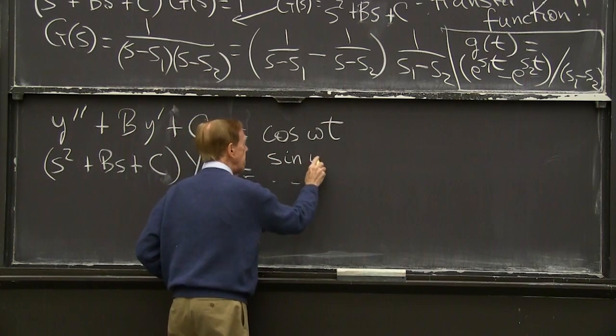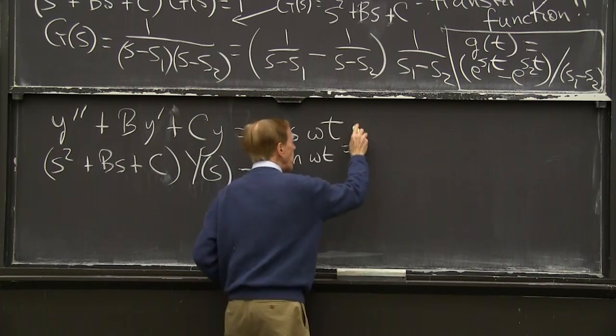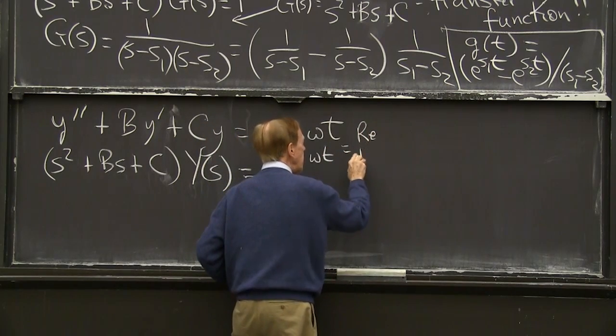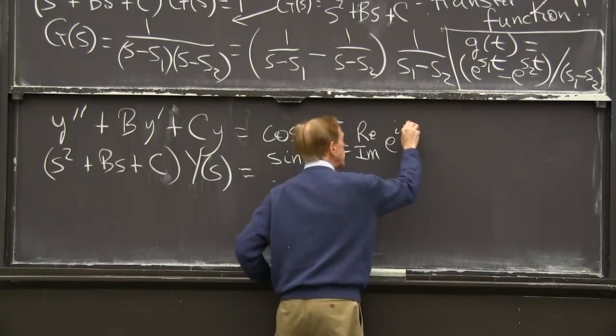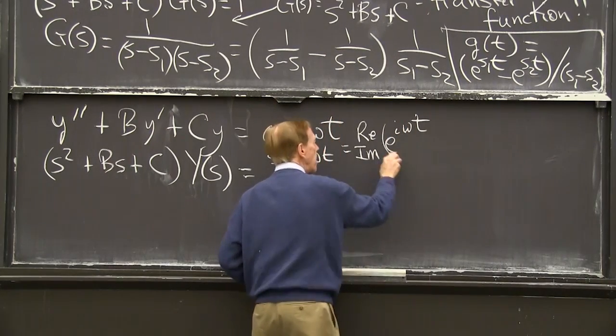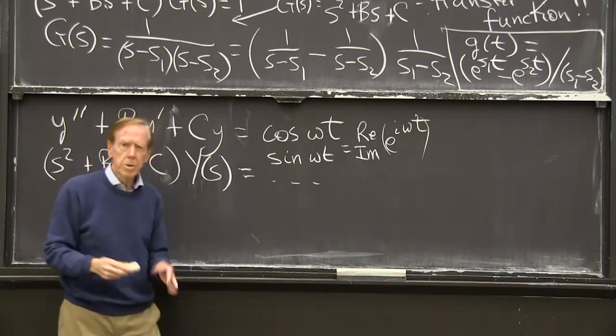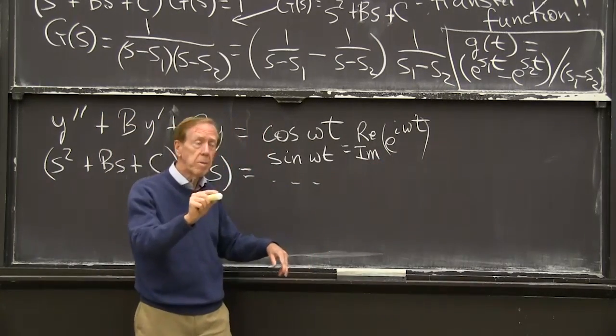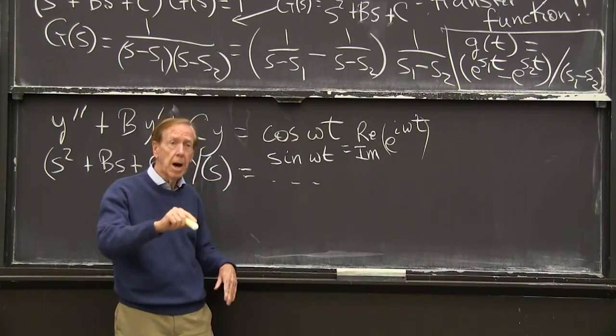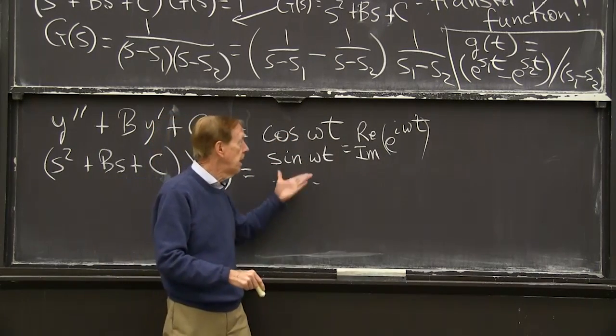So let me put down them both at once. The cosine and the sine are the real and imaginary parts of e to the i omega t, right? Euler's great formula. E to the i omega t is cosine omega t, the real part, plus i sine omega t, the imaginary part.